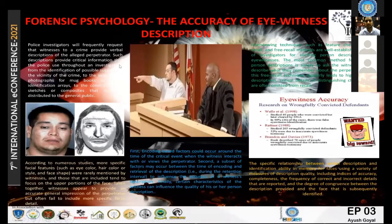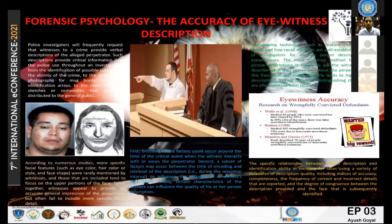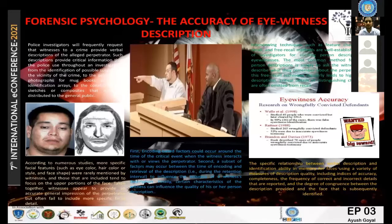Good evening to the respected chairperson, jury members, and all of you. Today the topic of my poster presentation is the accuracy of the eyewitness description. When any crime happens, police officers request witnesses to provide verbal descriptions of the suspect. Such descriptions provide critical information that police use throughout an investigation for the identification of possible suspects.